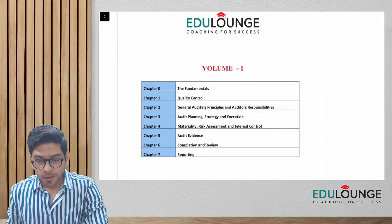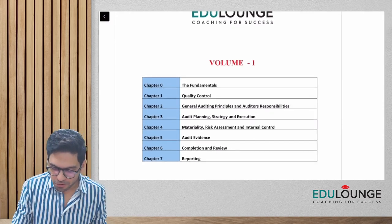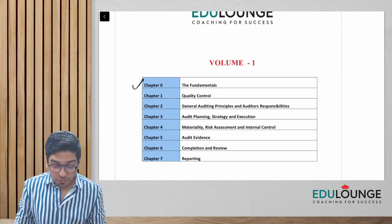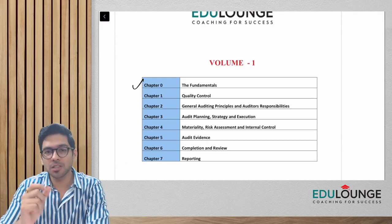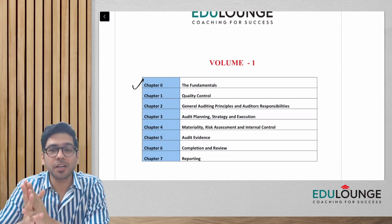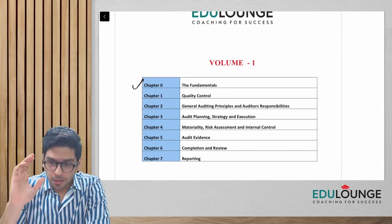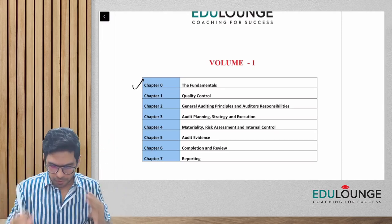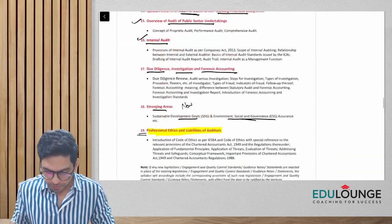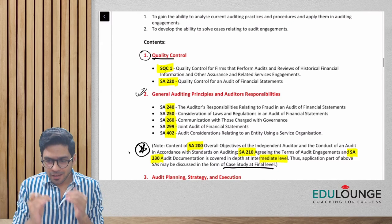Alright friends, we have completed the fundamentals part, which is not part of your syllabus, but we discussed certain terminologies and concepts that we will be using in all upcoming chapters while covering the Standards on Auditing and other standards. That is why I covered the basics. Now, looking at the content of Volume One, the very first chapter is on Quality Control, which covers SQC1 and SA 220.